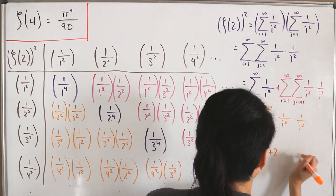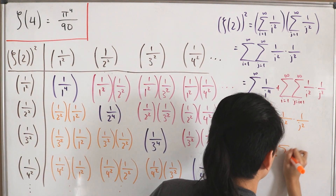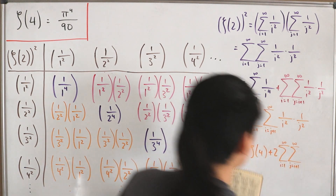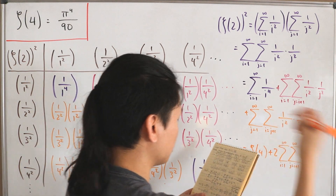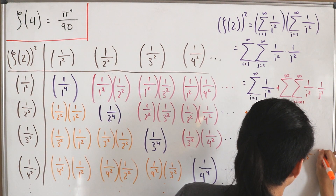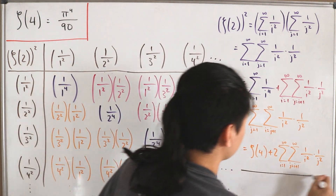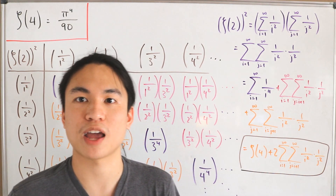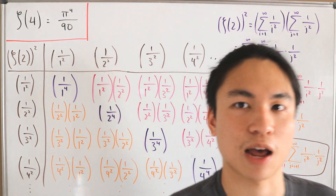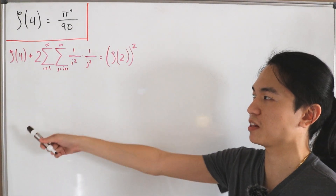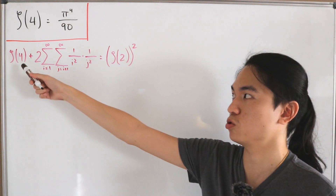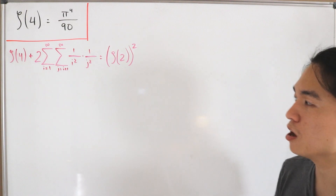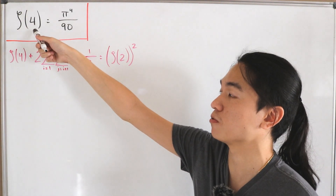Since the upper and lower triangular sums are equal, we can write ζ(2)² = ζ(4) + 2 times the double sum from i=1 to infinity and j = i+1 to infinity of 1/(i²j²). This is our key equation — it doesn't matter which indices we label i or j since they yield the same values — and this is what we need to evaluate to prove that ζ(4) = π⁴/90.